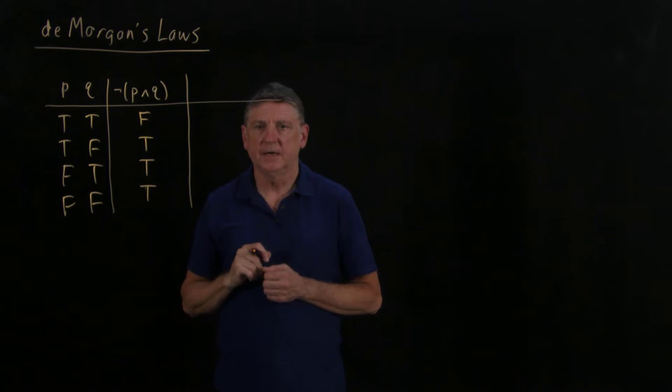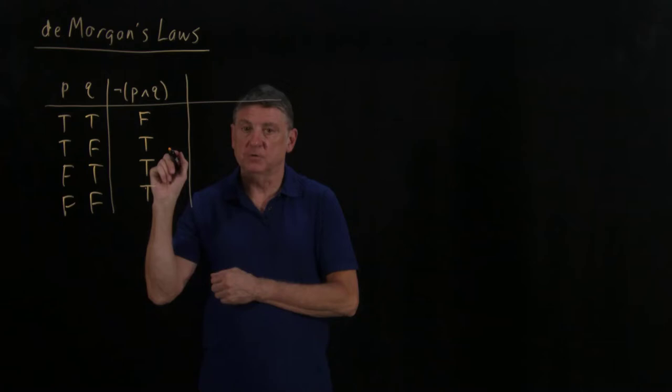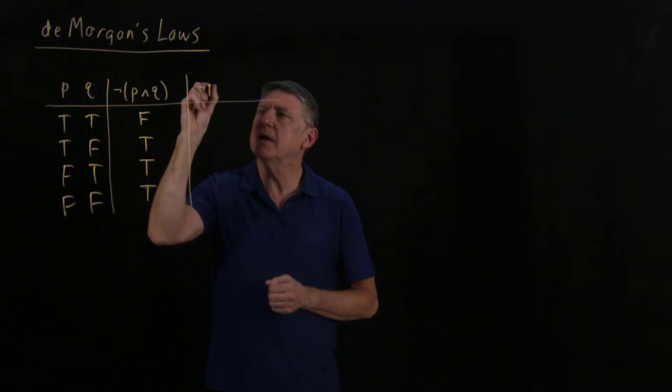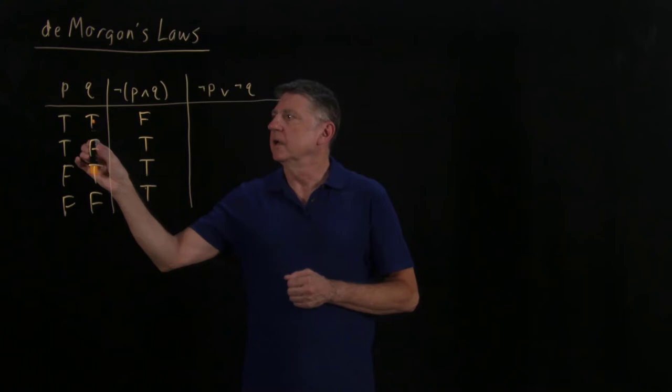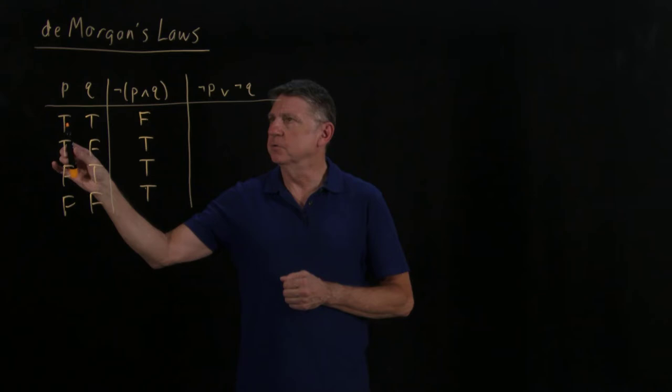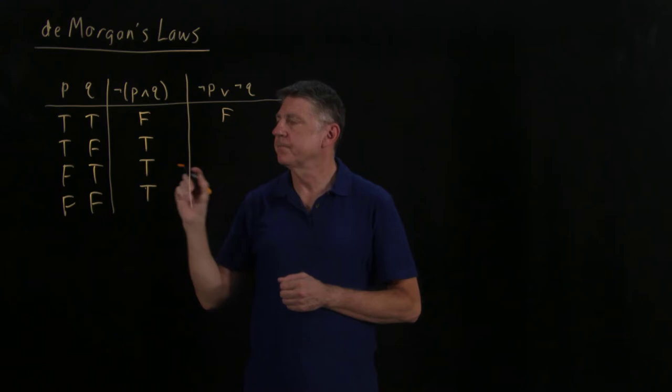Now let's take that bit of reasoning and write down the truth table for it. When we said if it's not true that p and q are simultaneously true, then one of them has to be false. So we postulate that a formula of interest is the negation of p disjoined with the negation of q. In the first row, p is true so not p is false, and q is true so not q is false — false or false evaluates to false.